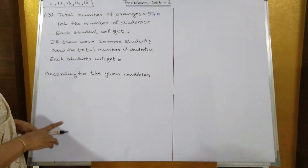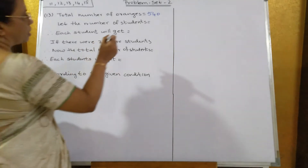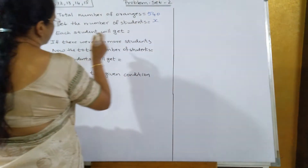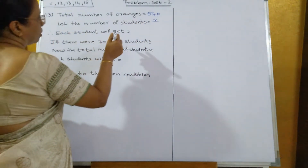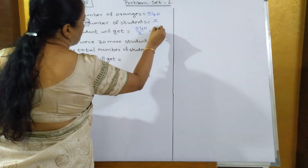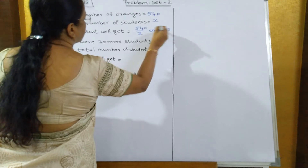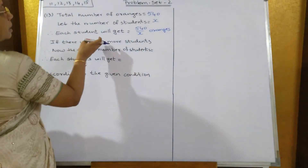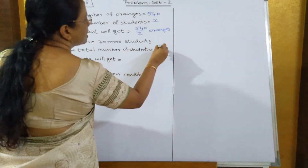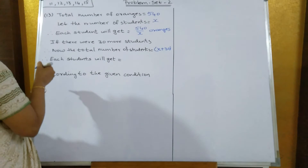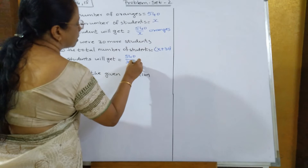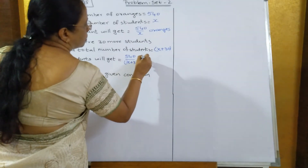This is problem number 13. The total number of oranges is 540. Let us take the number of students to be x, so each student will get 540 upon x oranges. Now if the number of students increases by 30, the number of students becomes x plus 30, so each student will get 540 upon x plus 30 oranges.